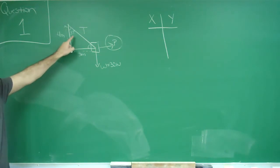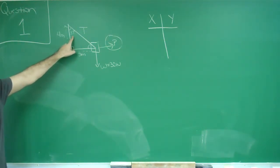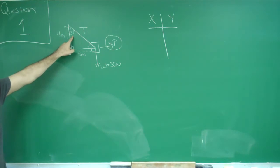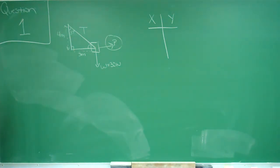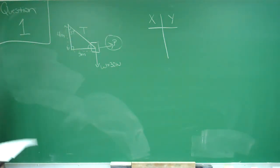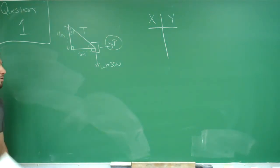We know that 3-4-5 triangles have an angle of about 37 degrees — it's about 36.8 degrees. So your answer might be about a tenth off if you round up to 37.